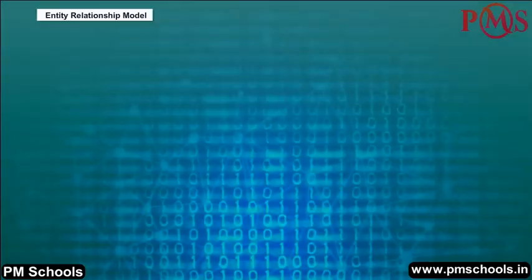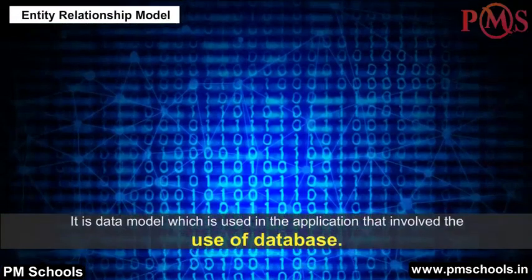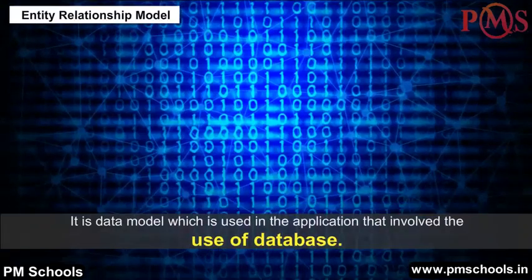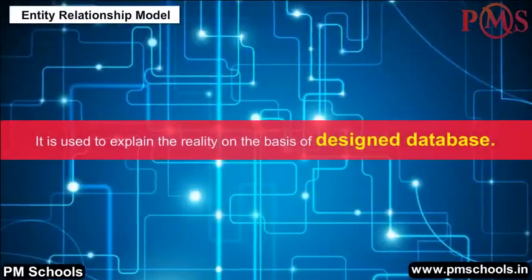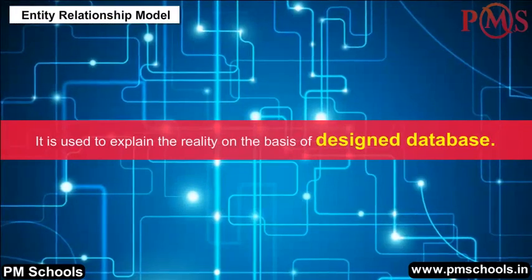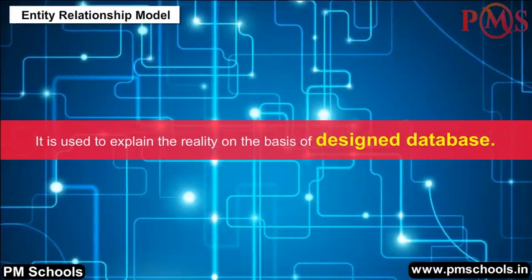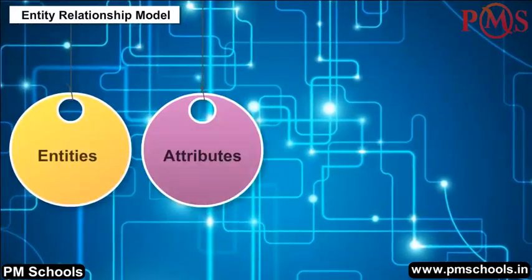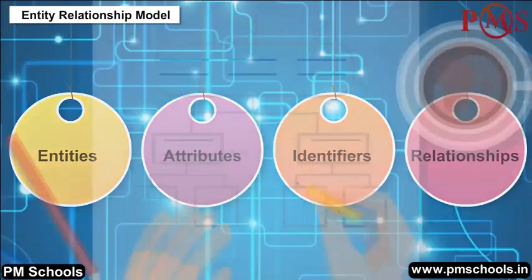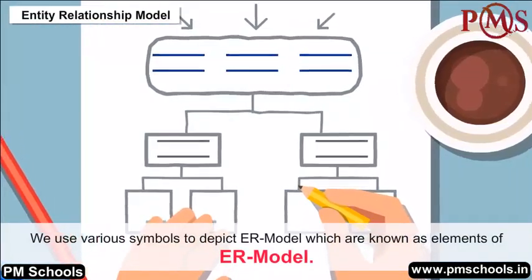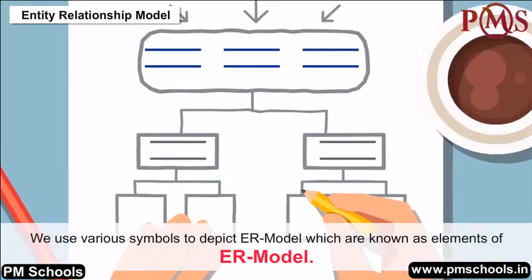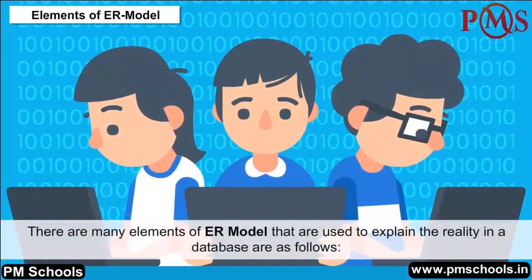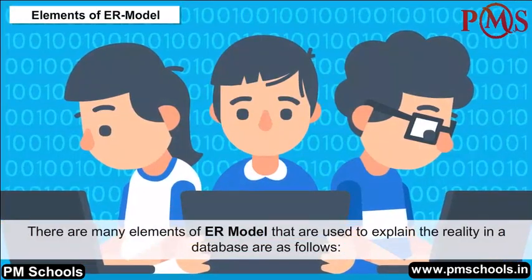ER Model — Entity Relationship Model: It is a data model used in applications that involve the use of a database. It is used to explain reality on the basis of which a database is designed. The components of the ER model are entities, attributes, identifiers, and relationships. Various symbols are used to depict the ER model, which are known as elements of the ER model.